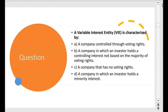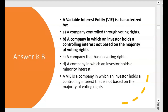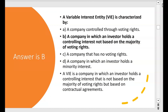Let's try this question: a variable interest entity is characterized by what? A: a company controlled through voting rights — no, A is wrong. While most companies are controlled through voting rights, the VIE model is an exception. B: a company in which an investor holds a controlling interest not based on the majority of voting rights — yeah, that sounds good. C: a company that has no voting rights — no. D: a company in which an investor holds a minority interest — no, minority interest means non-controlling interest. B is correct because the VIE is a company in which an investor holds a controlling interest not based on the majority of voting rights; it's based on contractual agreements.